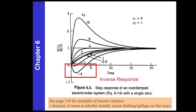One example of an inverse response: as you initially increase the steam to a reboiler, you can have some frothing or spillage on the first trays, which can exhibit this type of inverse response — where you first see the response go down before it goes back up again. That's just one example of an inverse response on a level on some of your trays for a reboiler change — an increase in steam to the reboiler.